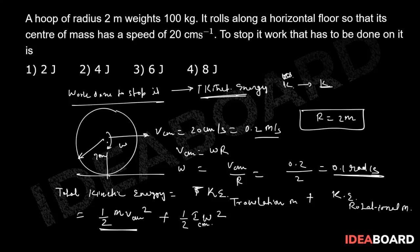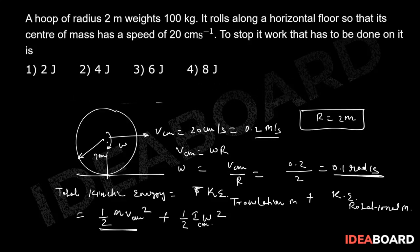For a hoop, the moment of inertia is I = mr². So I equals m times r squared. Putting in the values, m is 100 kg and r is 2 meters, so r² is 4, giving I = 100 × 4 = 400 kg·m².